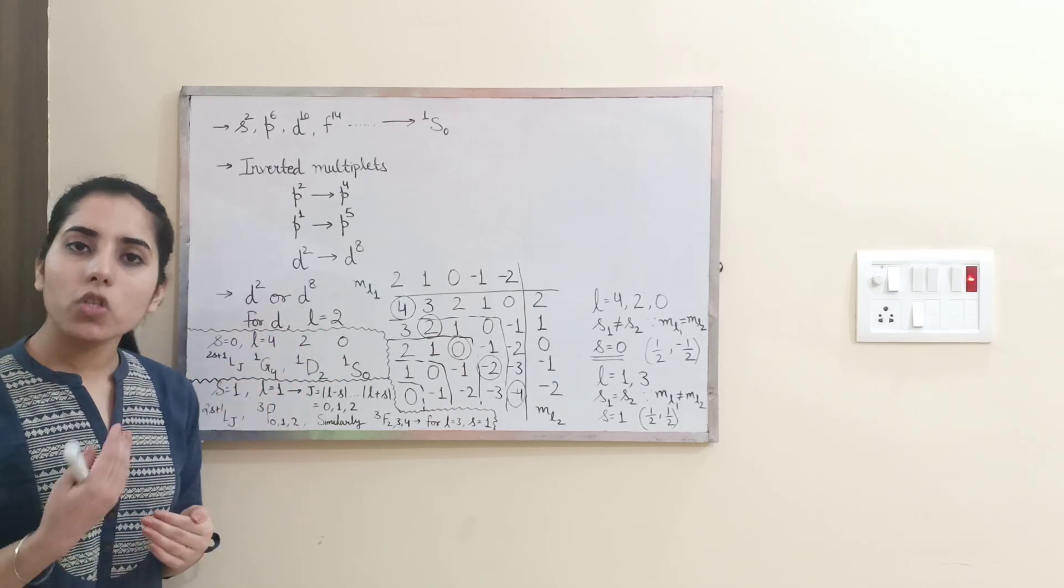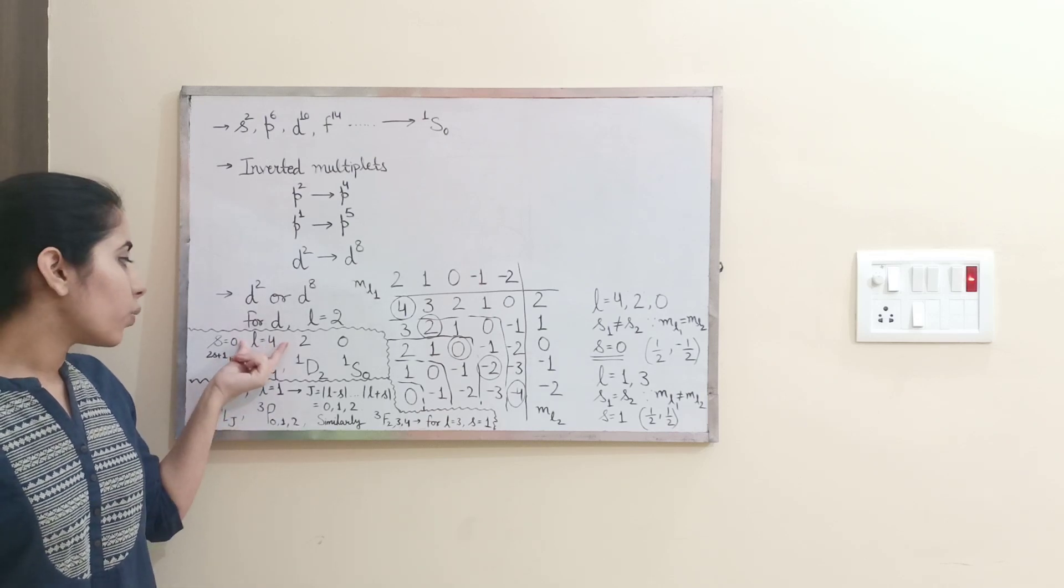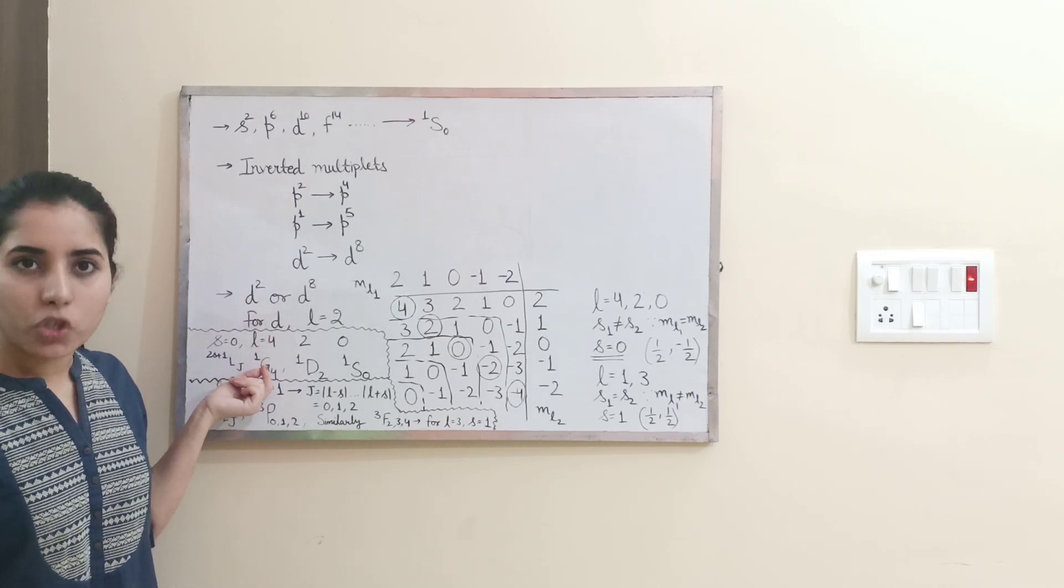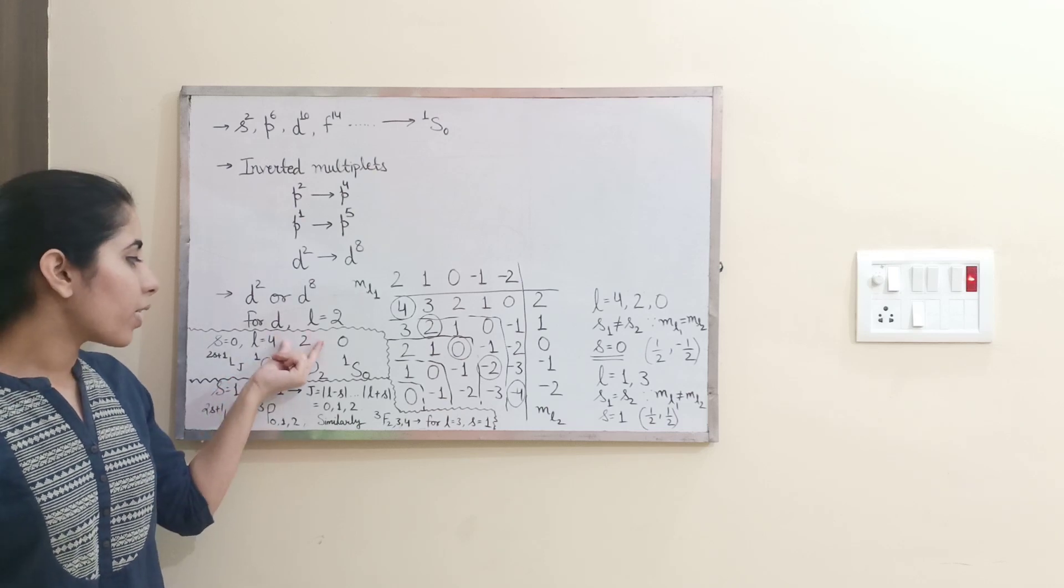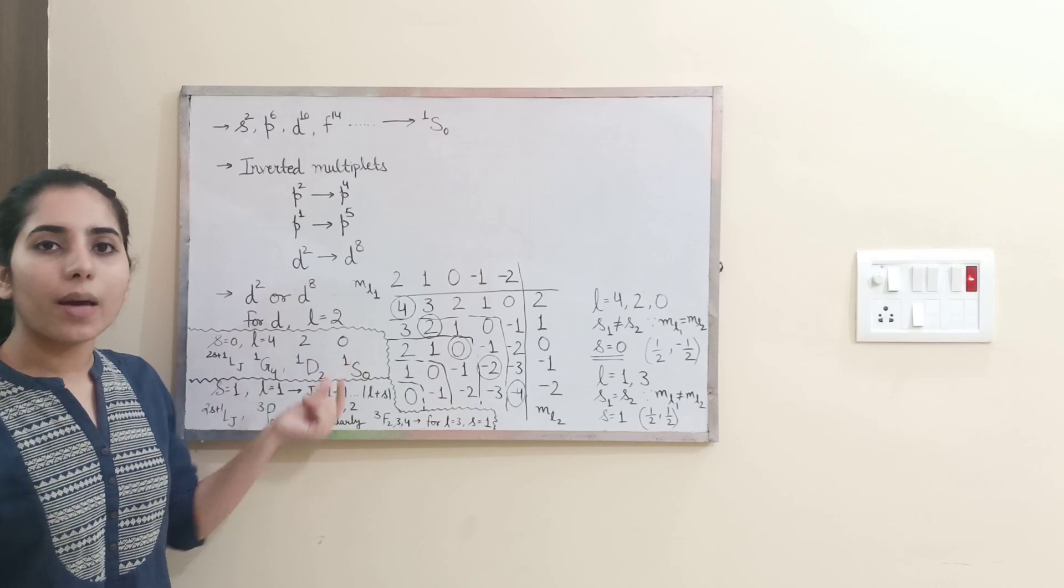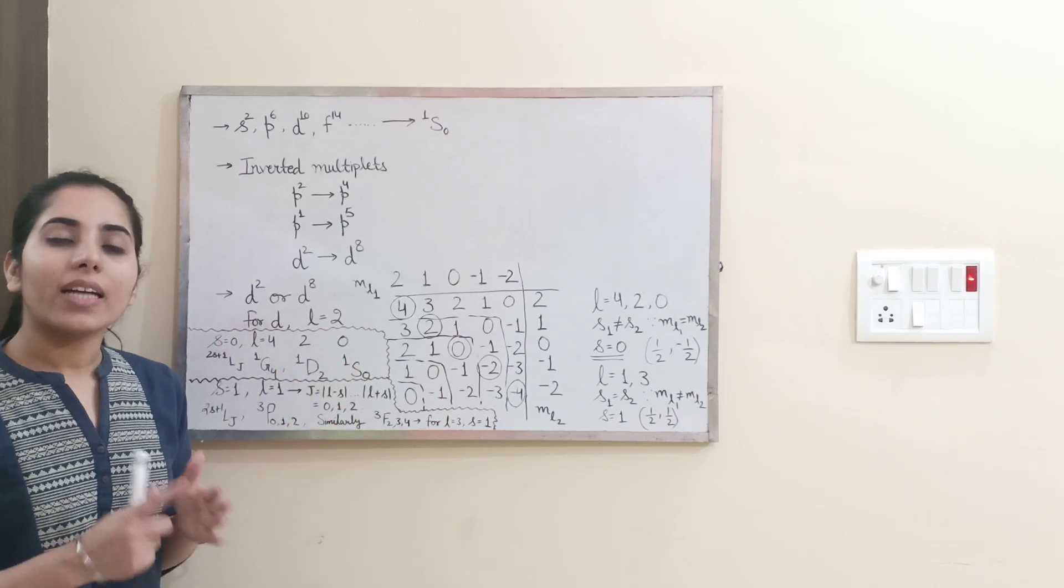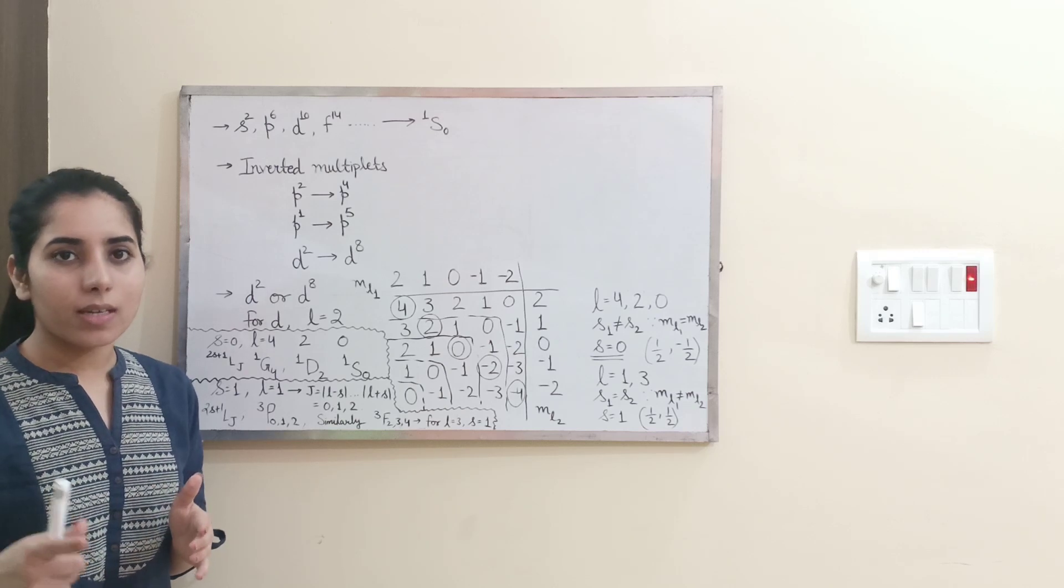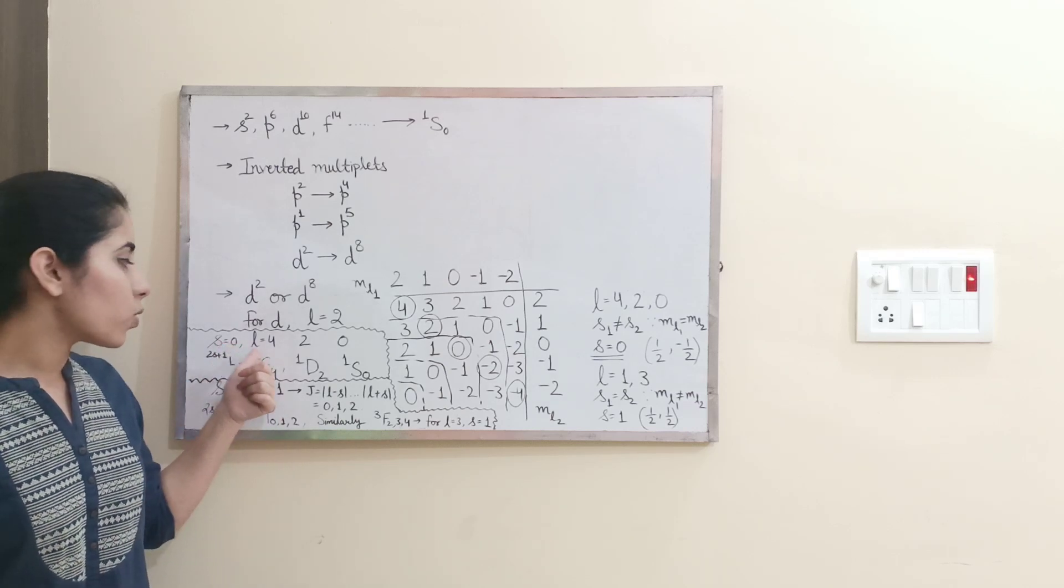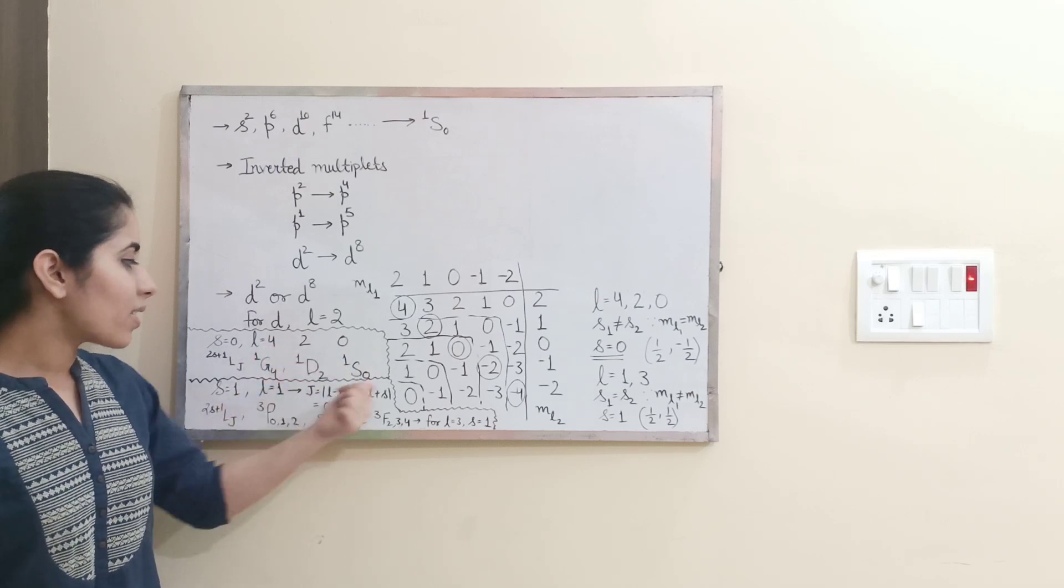Depending on the values of L, we write the capital L value. So for L is equal to 4, capital L will be G. Here, then for L is equal to 2, capital L will be D. For L is equal to 0, capital L will be S. So that's how we are just going to write it. And J is L minus S to L plus S. But in this case, S is 0, so J will remain same as L, which means 4, 2 and 0 as I have written it here.